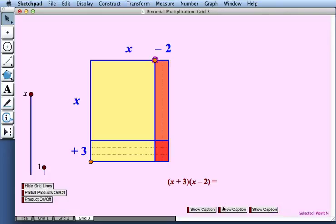So we have x squared minus 2x plus 3x minus 6 and that's equal to x squared plus x minus 6.